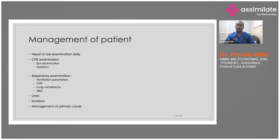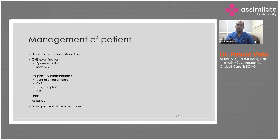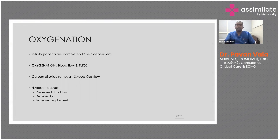Nutrition is critical — ECMO is a highly inflammatory procedure making patients catabolic. If they are not fed well, they lose muscle mass, making it harder to wean them off the ventilator later. We must also manage the primary cause of respiratory failure, because ECMO is a support system, not a treatment by itself. Unless the primary cause is managed, the patient will not be able to come off ECMO.